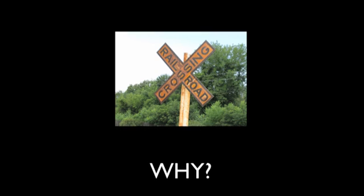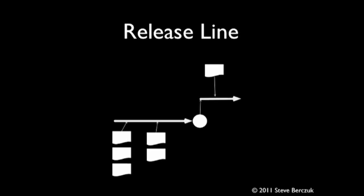While how a tool supports branching is important, it's more important to understand why you are branching and if branching is as helpful as you'd like. Branches are helpful if they enable you to work more quickly than a single code line would. A common branching pattern is to create a branch when you release software. The release line allows you to deliver fixes to the release software quickly without having to worry about the impact of new development work on code. Most of the time, a release branch is the right choice for managing changes to a release.